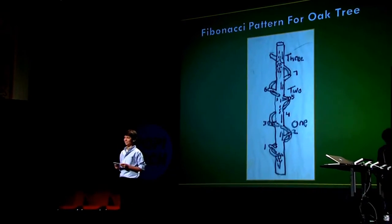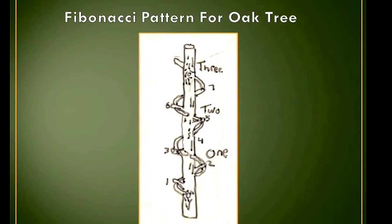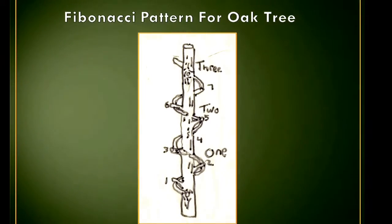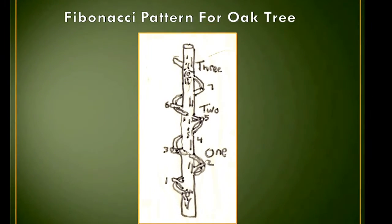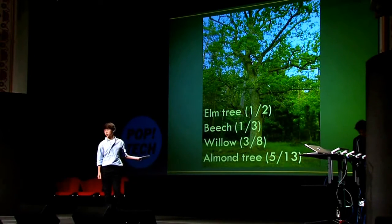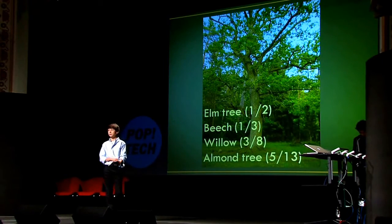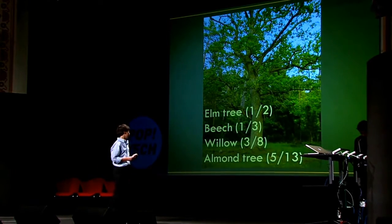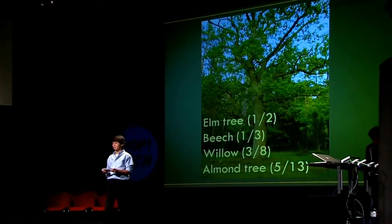Tree branches follow a Fibonacci formula. The oak tree has a Fibonacci fraction 2 to 5, which means that five branches spiral around the trunk two times to reach the same starting point on the trunk. Different types of trees have different patterns — for example, the elm tree is 1 to 2, the beech tree is 1 to 3, the willow tree is 3 to 8, and the almond tree is 5 to 13. But I still wanted to know: why do trees use this pattern?